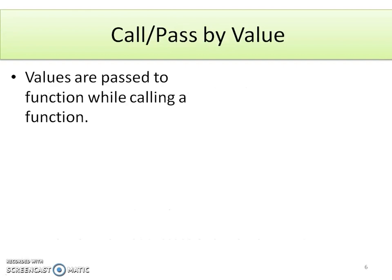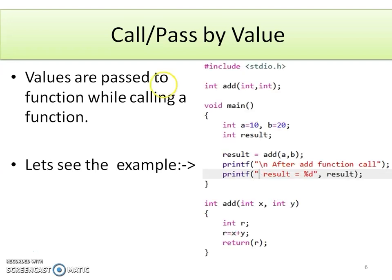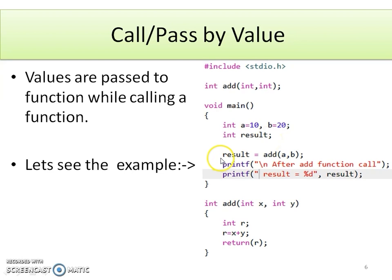Now let's see what is meant by call or pass by value. As explained, values are passed to the function during the function call. We'll see one example where we perform the addition of two numbers using a function. The function is named add, taking two integer parameters and returning an integer. In the main function, three integer variables are declared: A and B on which addition is performed, and result which holds the answer. This statement is the function call where we call add by passing the values of a and b.